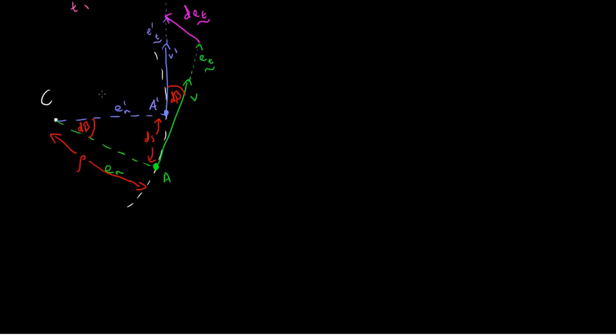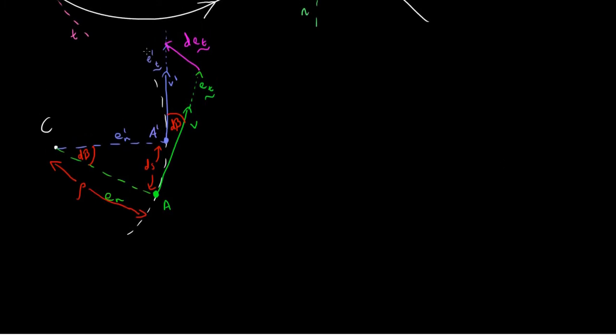It looks rather confusing, but bear with me. We have a path, which is this white dotted line here, with a particle that is initially at a point A, with a velocity v in the direction e_t, that then moves over a time delta t to a new position A' with a velocity v' in the direction e_t'.